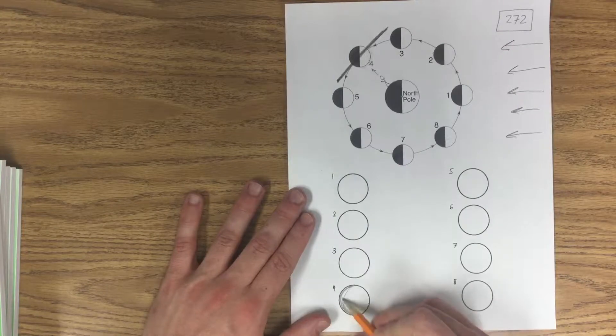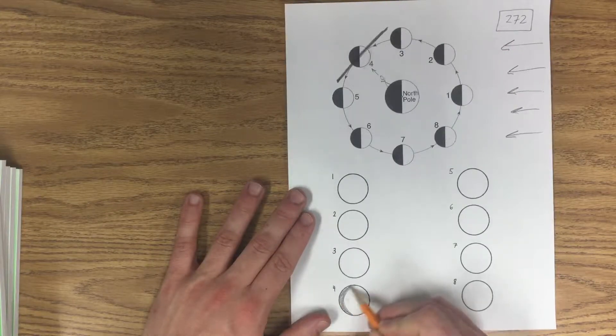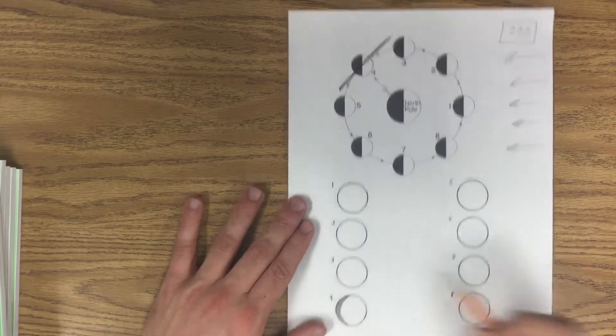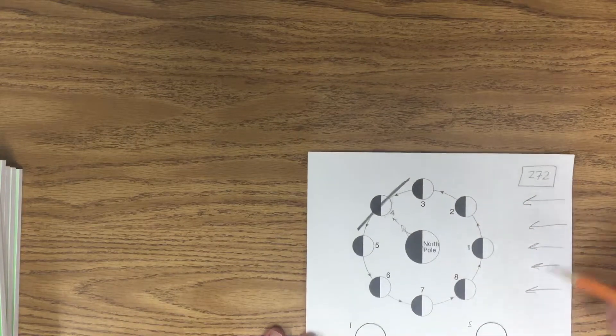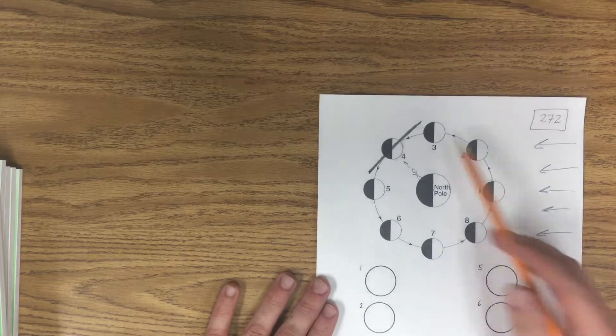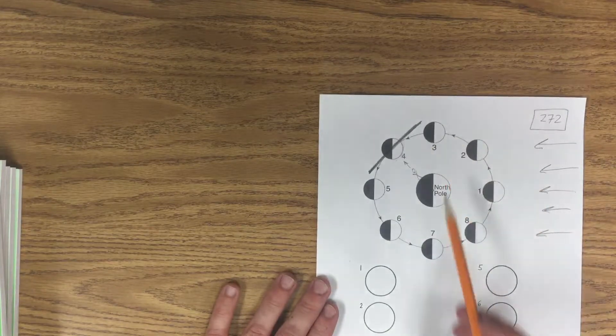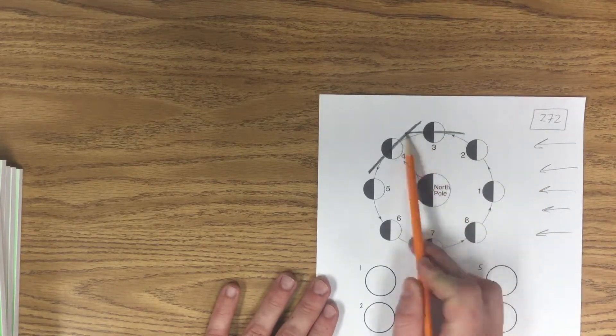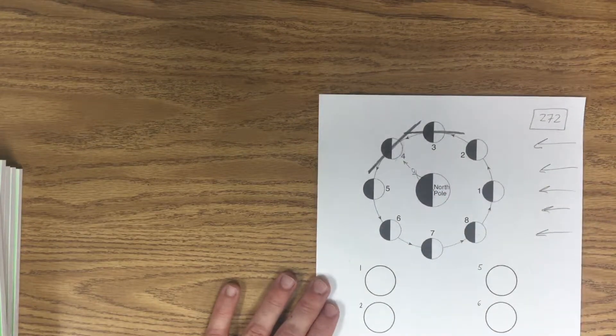We're always going to be looking at crescents when we have something that's more than half lit or less than half lit. If it's half lit, I got spot three or seven - we just draw a line straight down the middle.